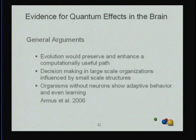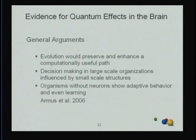Now let's look for some evidence that quantum effects are at all active in the brain. First, a few general arguments. Theoretically, it's well understood that there are numerous computational advantages from exploiting quantum computing. If evolution is worth its salt, you would think evolution should preserve or enhance a powerful computational pathway — particularly since life started from single cells and below, structures much closer to the energy scales relevant to quantum mechanics.